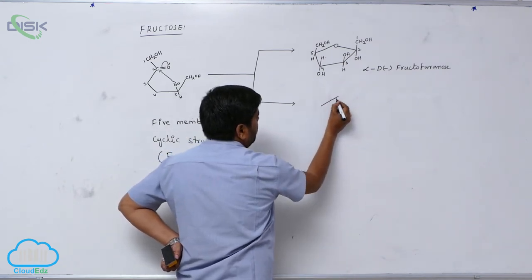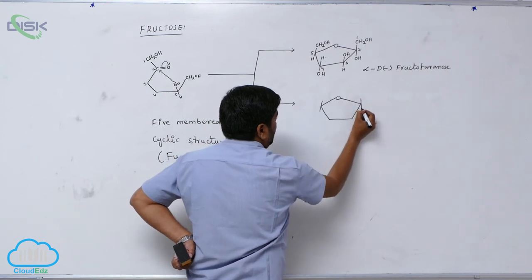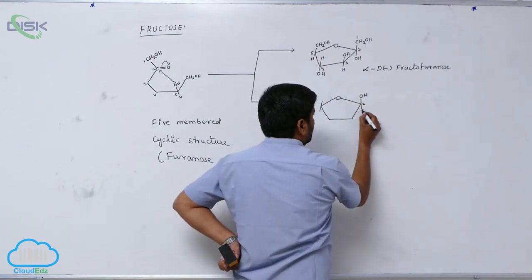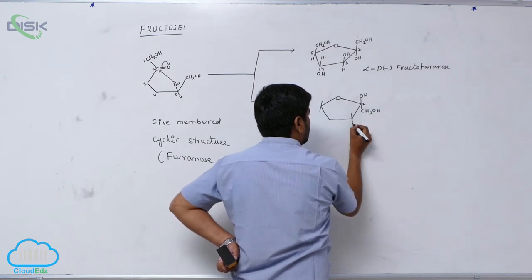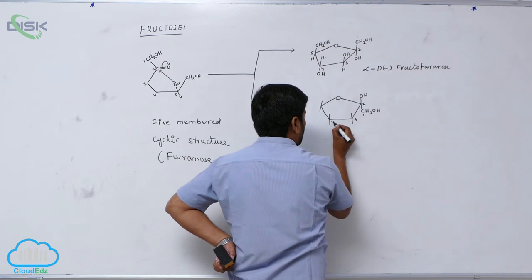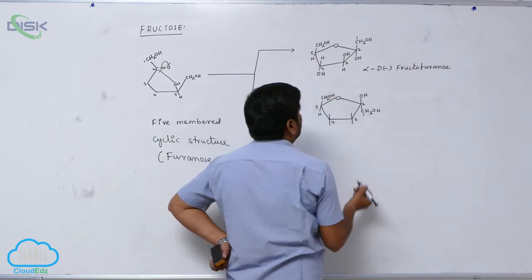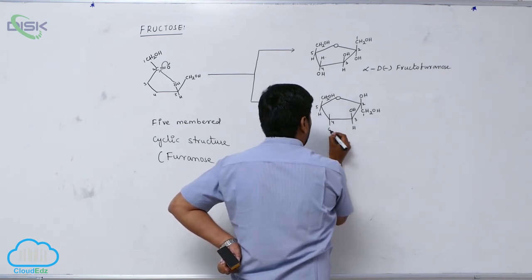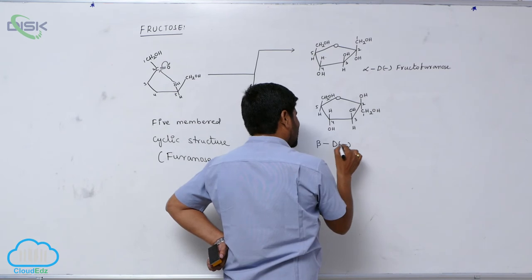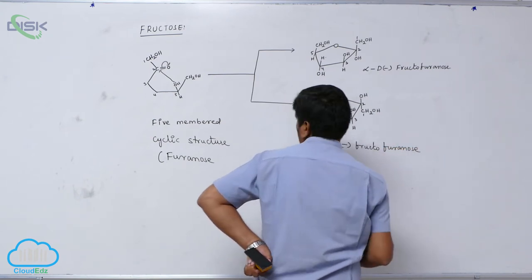Coming to the beta form: if you want beta, the second carbon OH is above the plane, meaning it is on the left side. CH2OH is present, and the remaining positions are as they are. The first carbon, 2, 3, 4, 5: CH2OH, then hydrogen. OH above, hydrogen below. This particular form is known as beta D-minus fructofuranose.